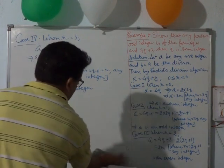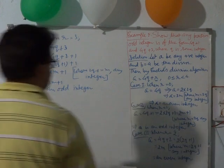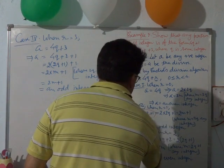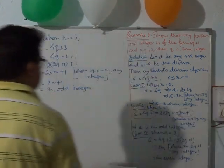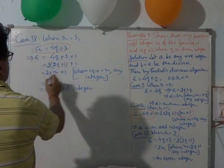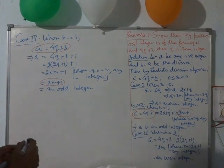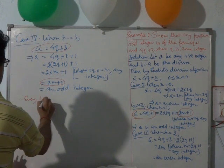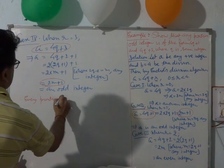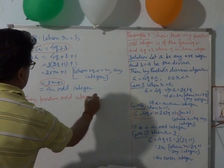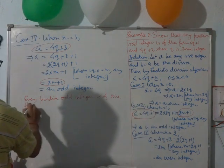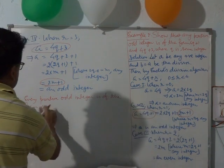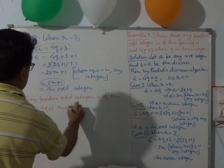So we find that in case 2 where remainder is 1, and in case 4 where remainder is 3, A is an odd integer. When A equals 4q plus 1 we get the form 2m plus 1 — an odd integer format. When A equals 4q plus 3 we also get the form 2m plus 1 — an odd integer. Hence we conclude that every positive odd integer is of the form 4q plus 1 or 4q plus 3.